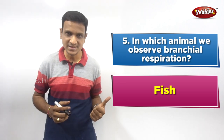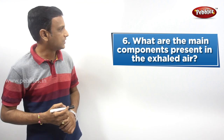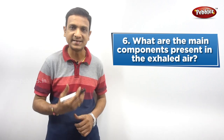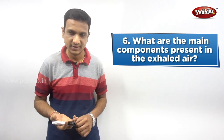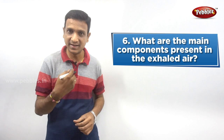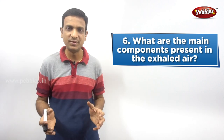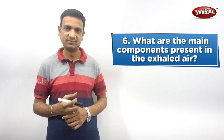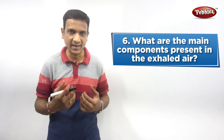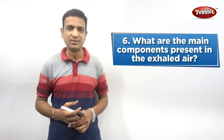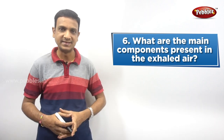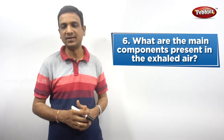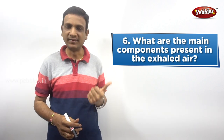Sixth question: what are the main components present in the exhaled air? Exhaled air is the air we release out from our lungs. The air we take in is called inhaled air. We inhale air to absorb oxygen, so inhaled air contains more oxygen. The question asks what components the exhaled air mainly contains — guess the answer and write it in the comment section.